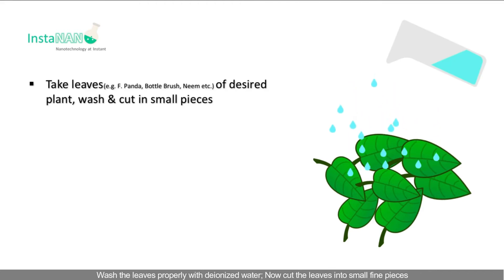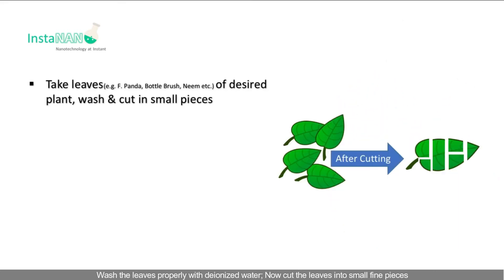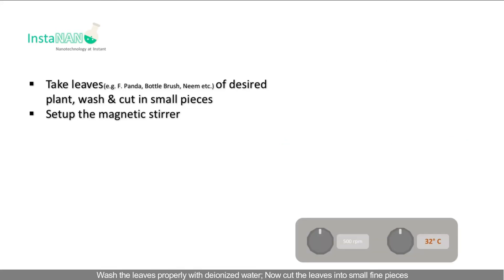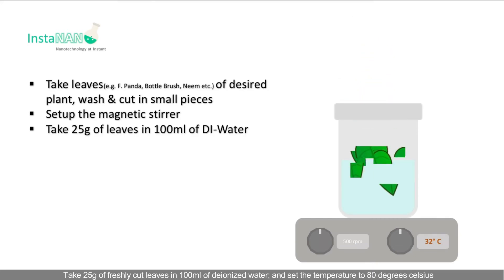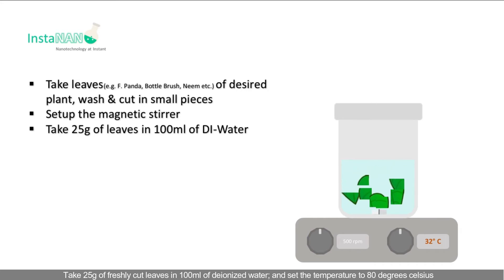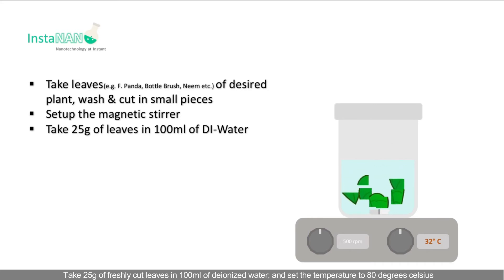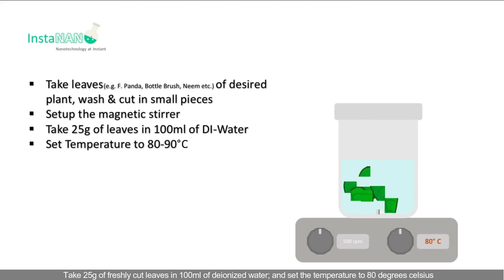Wash the leaves properly with deionized water, then cut the leaves into small fine pieces. Set up the beaker on the magnetic stirrer. Take 25 grams of freshly cut leaves in 100 ml of deionized water and set the temperature to 80 degrees Celsius.